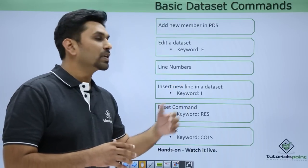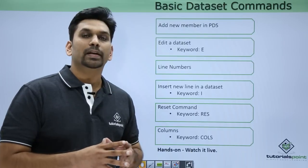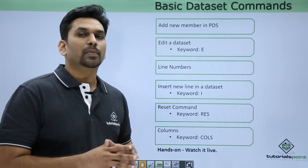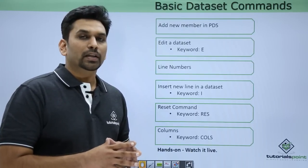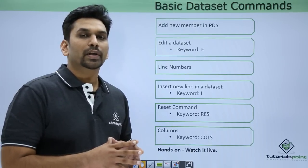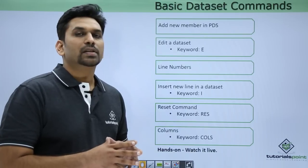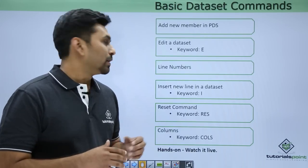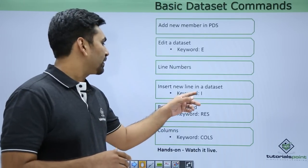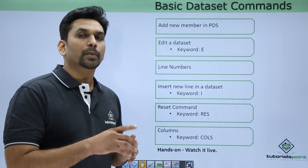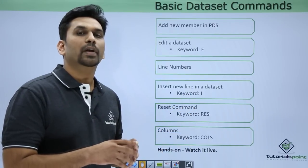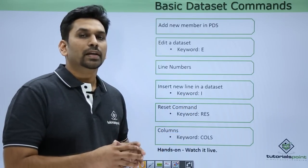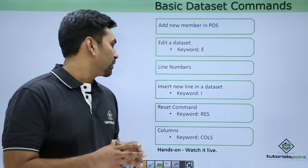Suppose you want to insert a new line in a dataset or inside a PS or PDS member — type I in the line number area and press Enter; it will insert one new line. If you want to insert 10 lines, write I followed by 10 and hit Enter; it will insert 10 new blank lines inside which you can write your data.